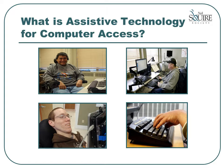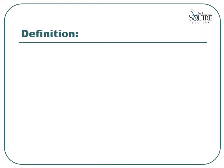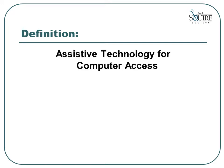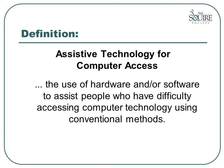In order to begin this introduction to assistive technology, it is important that we define the term. There are many different fields of assistive technology. They range from communications technology to assist someone with speech, to mobility technology such as walkers and wheelchairs. In this presentation, we are focusing on assistive technology for computer access. Our definition is: the use of hardware and/or software to assist people who have difficulty accessing computer technology using conventional methods.